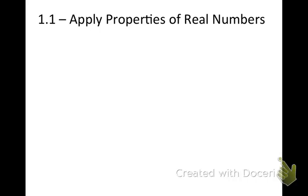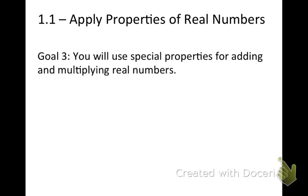This is the second video for section 1.1, which is about applying properties of real numbers. In this video we're going to talk about the properties of real numbers, whereas in the last one we talked about what are the subsets of real numbers and how you order them. The first goal is that you will be able to use special properties for adding and multiplying real numbers — things like the inverse property, the associative, or commutative property.